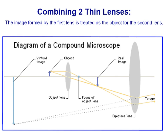Now let's take a look at a compound microscope. In a compound microscope we combine two thin lenses, and we think about it as the image formed by the first lens being treated as the object for the second lens — a two-step process. We're looking at some object through our microscope, and as long as the object is beyond the focal point for the first lens, we're going to get an image that is real and inverted.